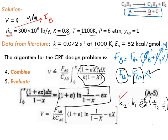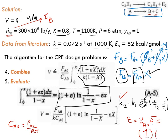For CA0, since it's a gas-phase reaction, CA0 equals PA0 over RT. For epsilon, we use ε equals yA0 times δ. Since we have a pure ethane feed, yA0 equals one. Delta equals (1 + 1) − 1 = 1, so epsilon equals one. With X given as 0.8, we can calculate the final volume, which comes out to be 80.7 cubic feet.